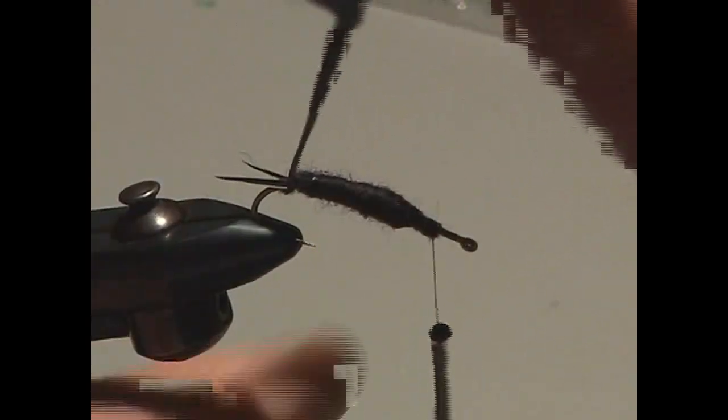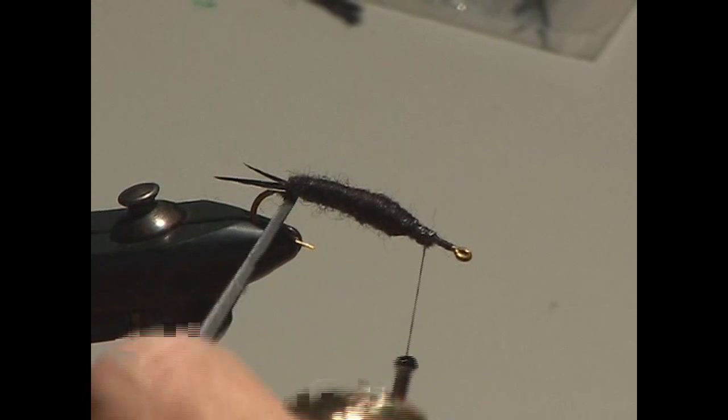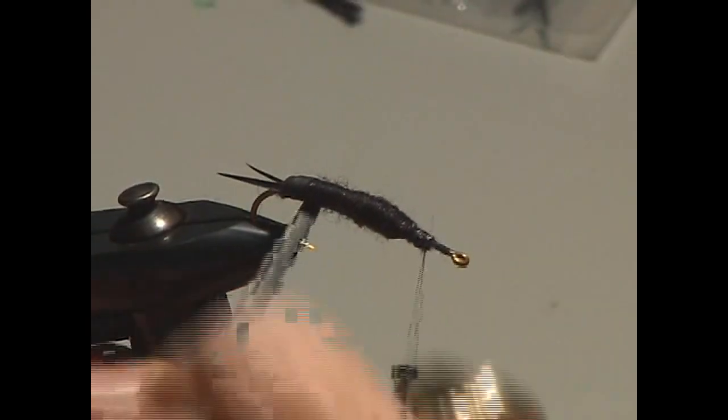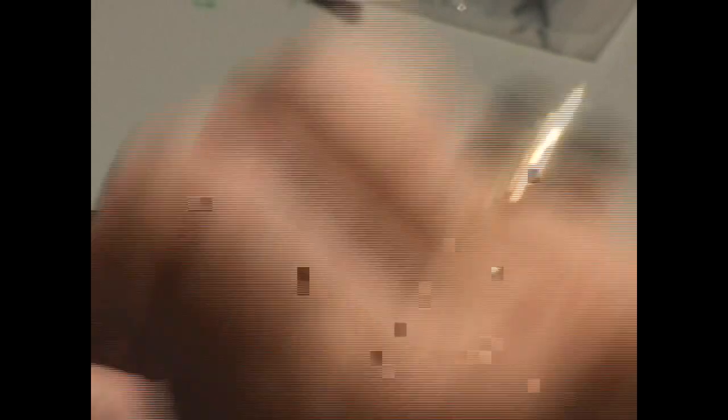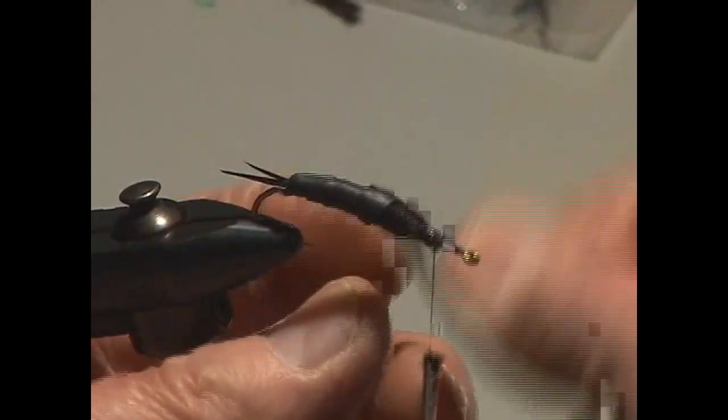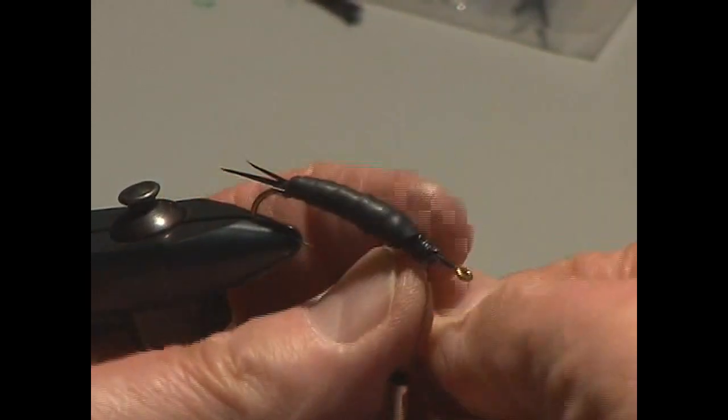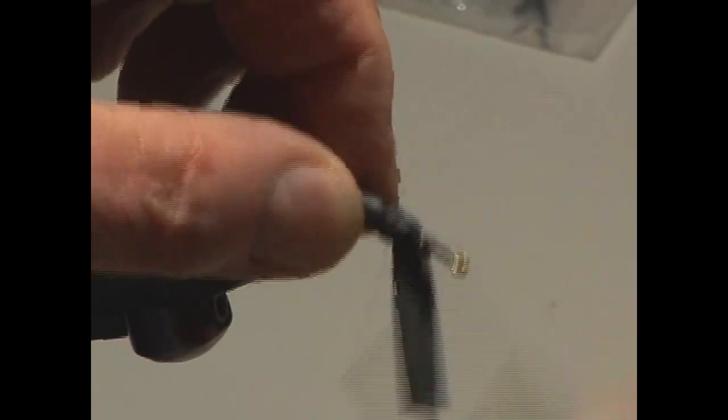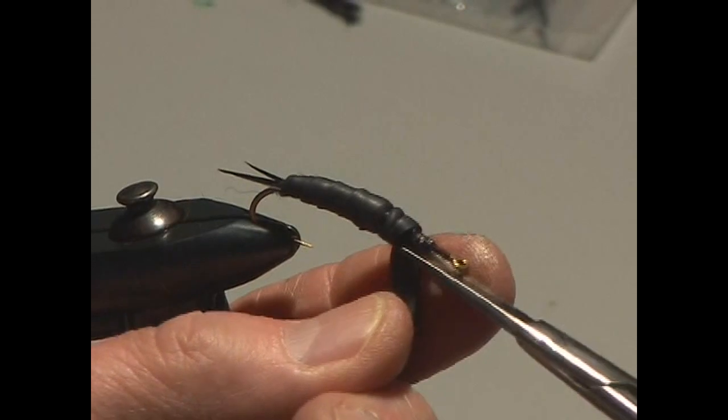Now we're going to take this, we're going to stretch this, and we're going to overlap. As we stretch a little bit, we're going to overlap this to create a perfect segmentation body of that great big Pteronarcys nymph that's found in our waters here. And we're going to wrap about three wraps. Helen Shaw, the great lady fly tier, always said, three wraps is all you need.